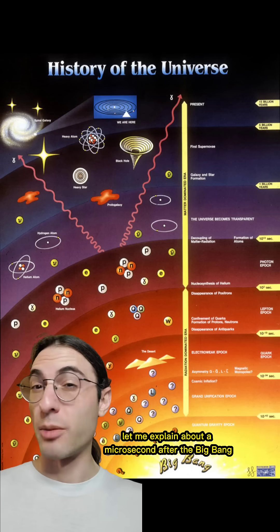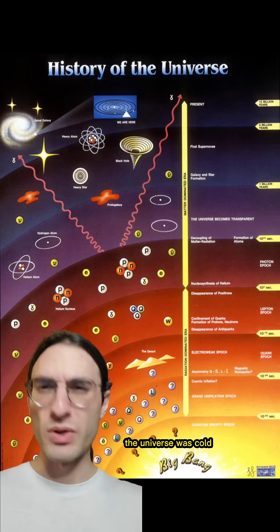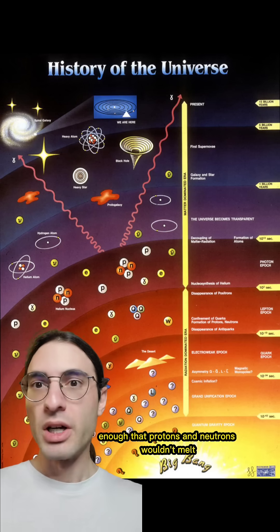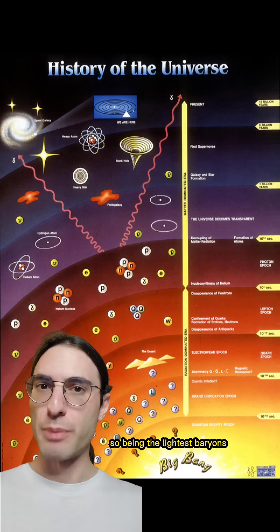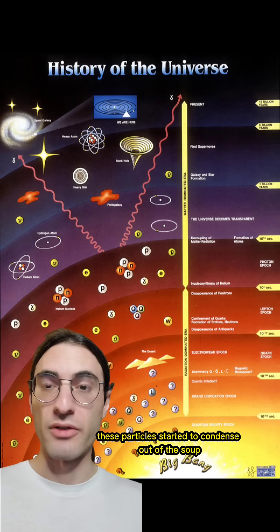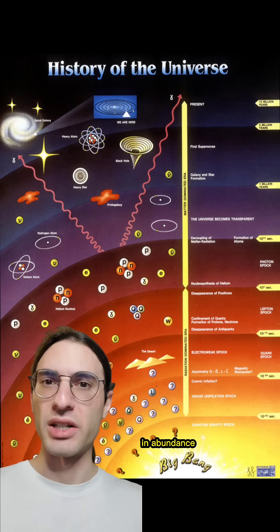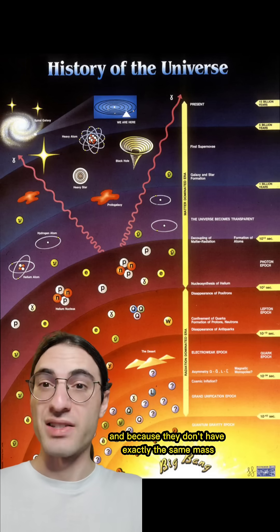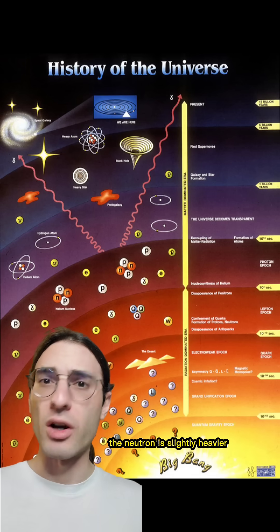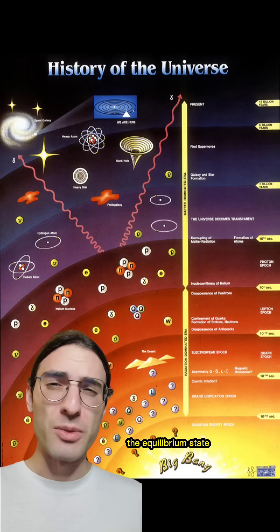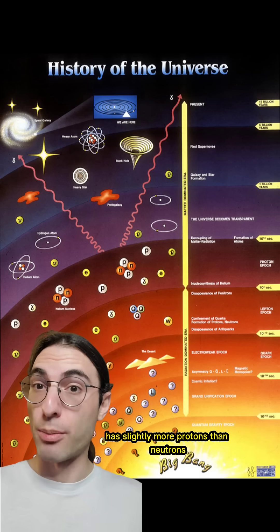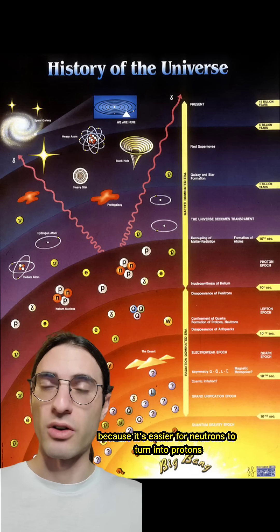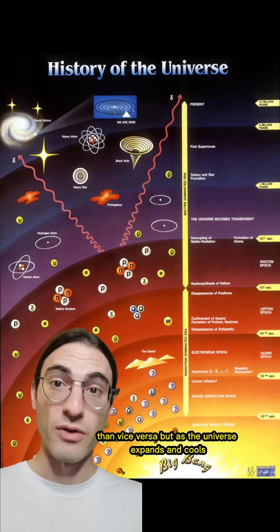About a microsecond after the big bang, the universe was cold enough that protons and neutrons wouldn't melt. So being the lightest baryons, these particles started to condense out of the soup in abundance. And because they don't have exactly the same mass — the neutron is slightly heavier — the equilibrium state has slightly more protons than neutrons.